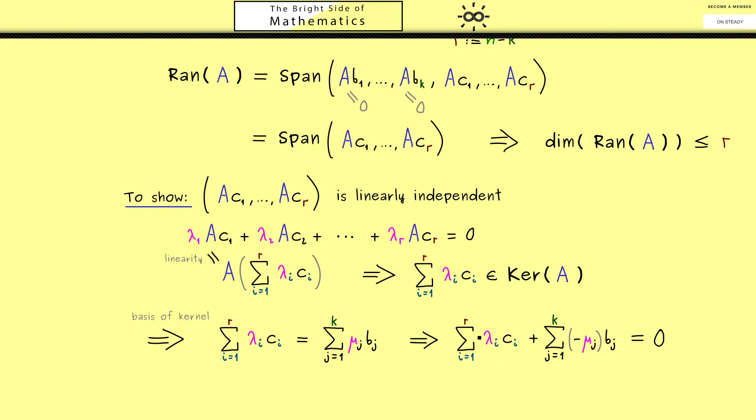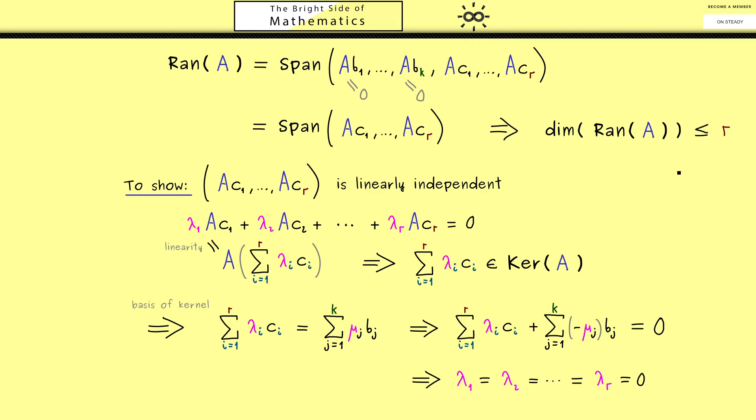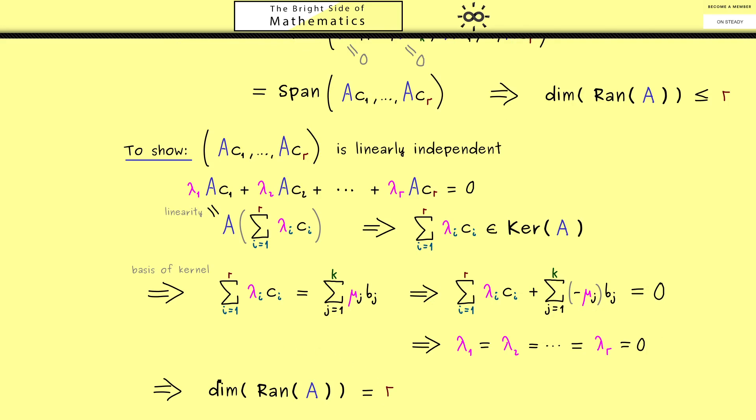Hence this means a linear combination for the zero vector is only possible with vanishing coefficients. In particular, we can conclude that all the lambda factors here are actually zero. And indeed, this is exactly what we wanted to show. Because with this result, we see only the trivial linear combination here is possible, which means that this family is indeed linearly independent. And with this result, we can conclude that the dimension of the range of A is indeed exactly r. In other words, the rank of the matrix A is r, and the Rank-Nullity Theorem is proven.